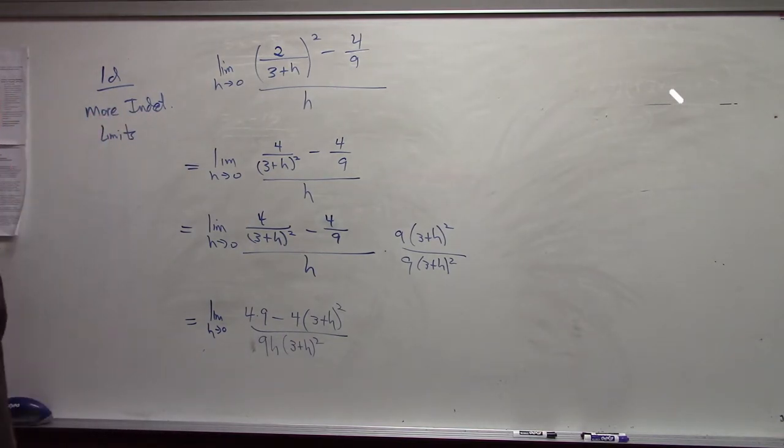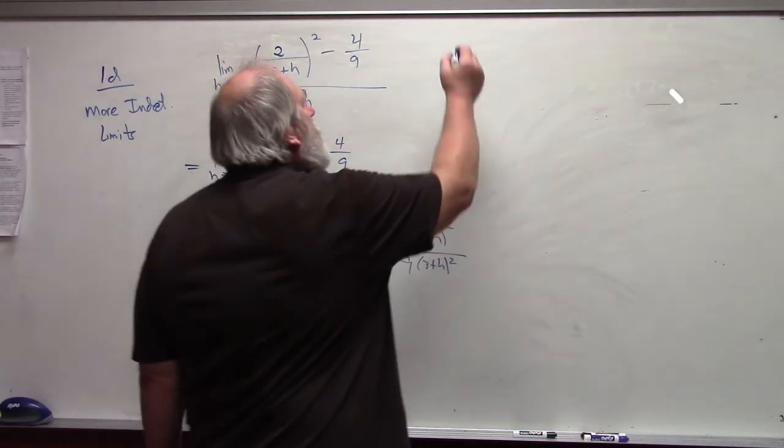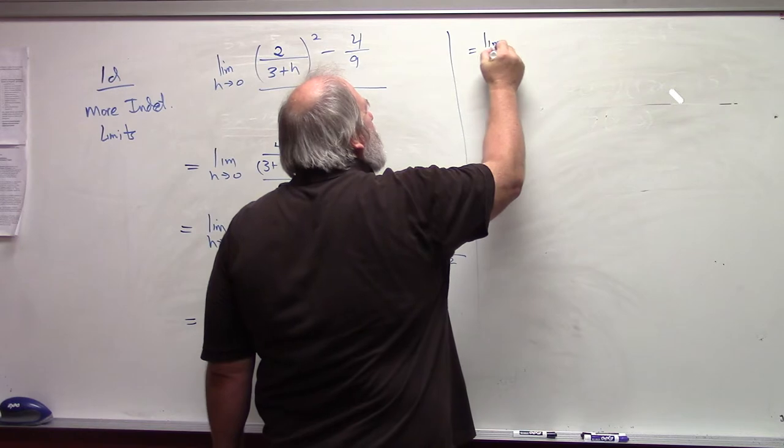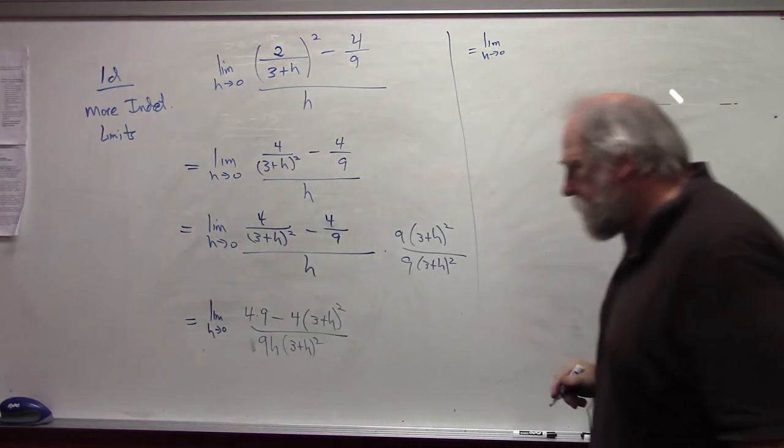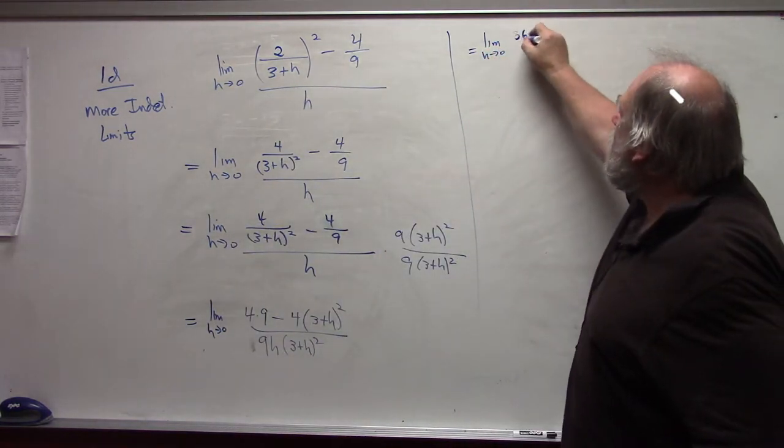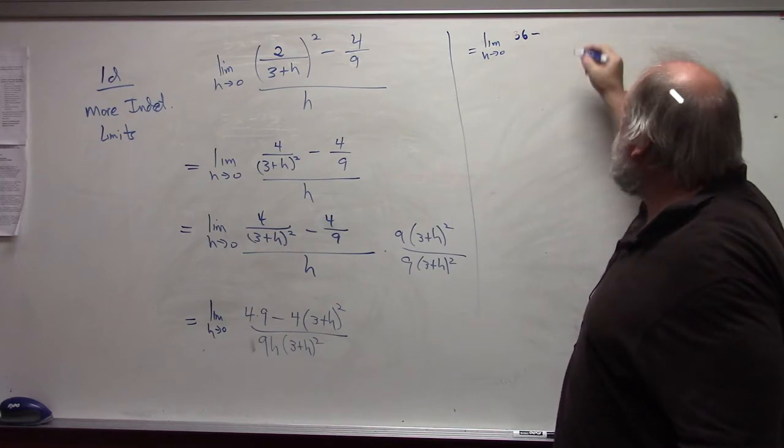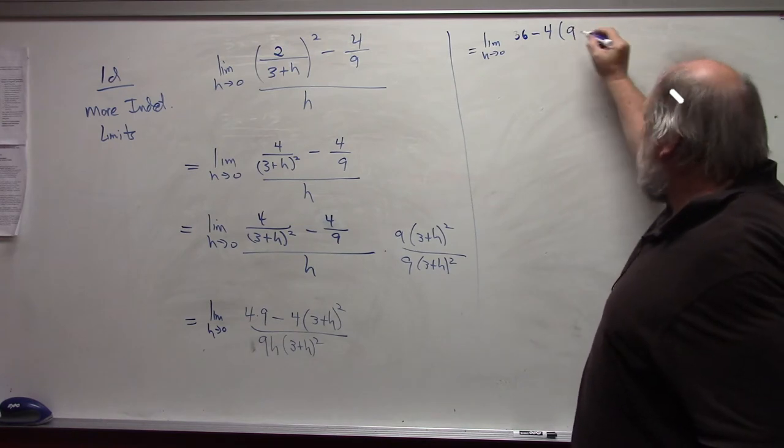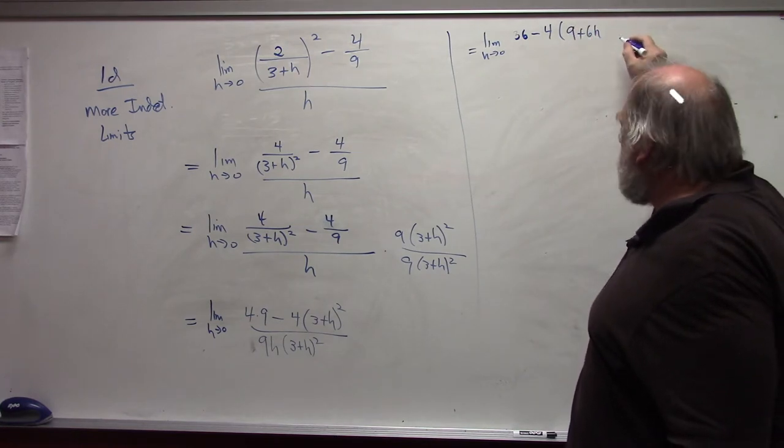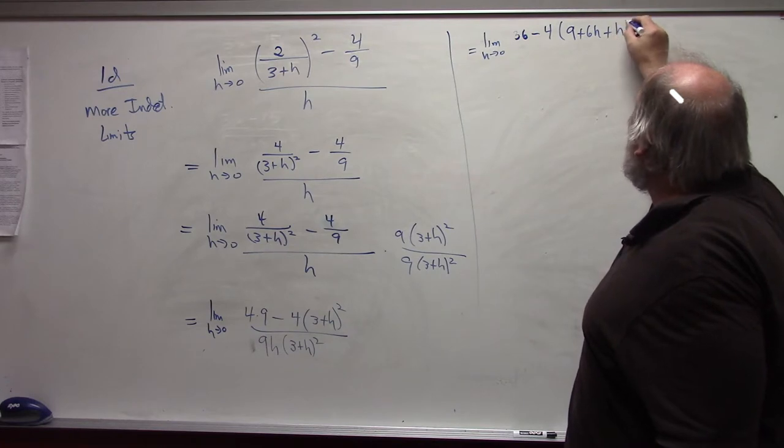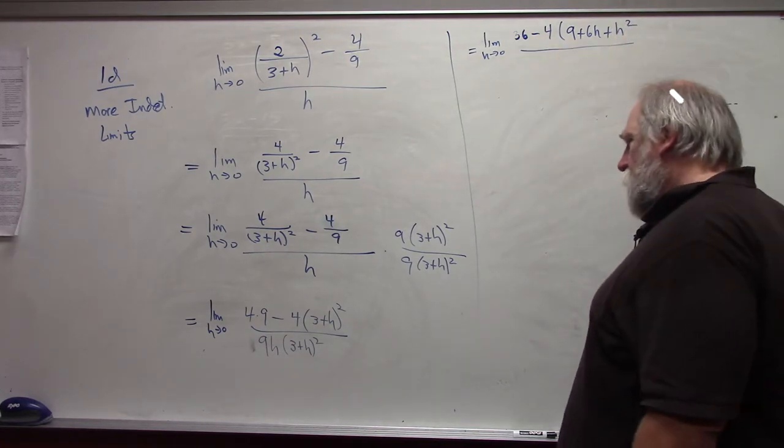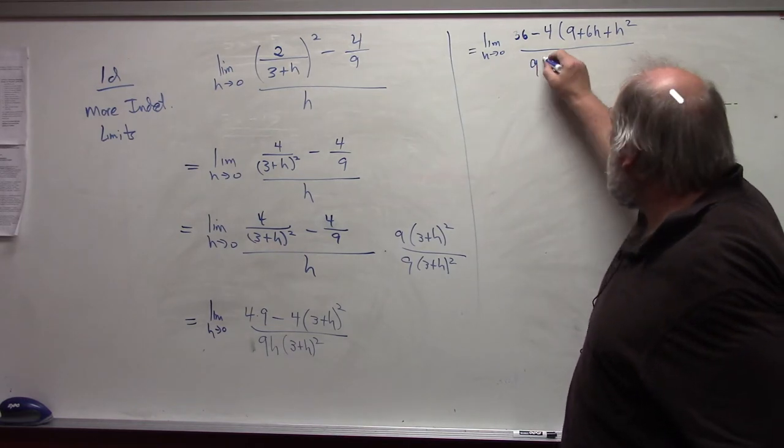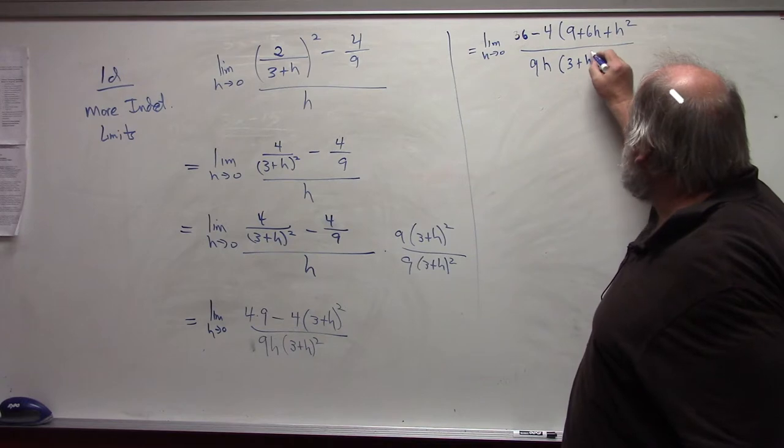Which then gives me limit h approaches 0 of 36 minus 4 times, and I'll square out the binomial, 9 plus 6h, don't forget the middle term, plus h squared all divided by 9h times 3 plus h quantity squared.